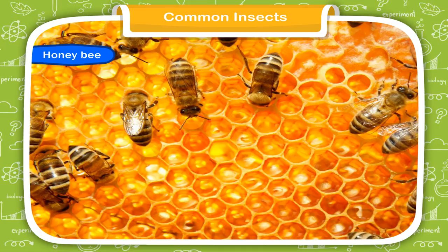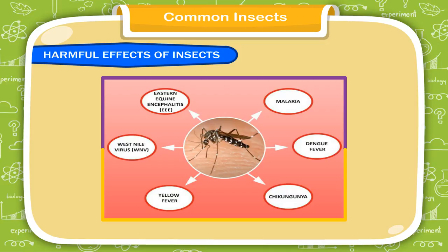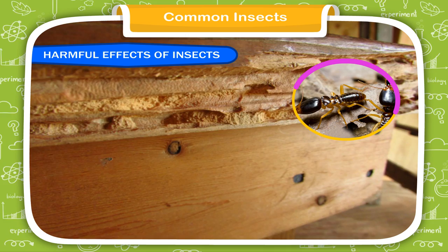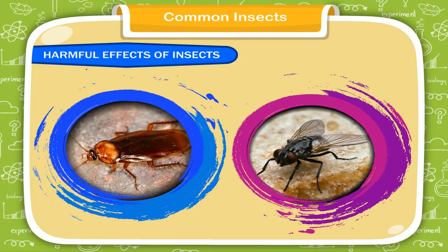Harmful Effects of Insects. Some insects like mosquitoes are harmful because they transmit diseases. Some insects like locusts damage our crops or gardens. Some insects like termites damage our furniture. Insects like cloth moths destroy cloth by making holes.